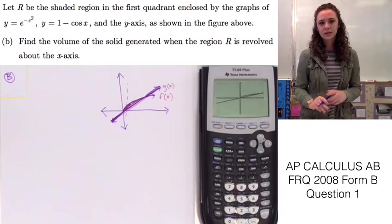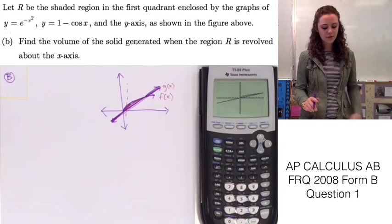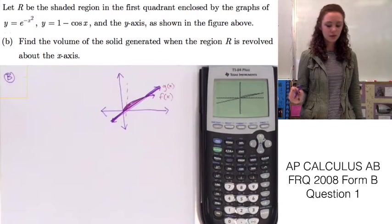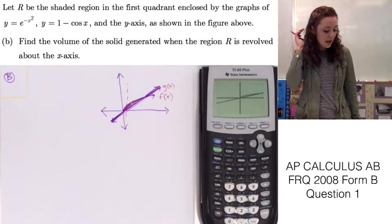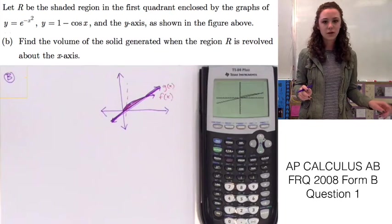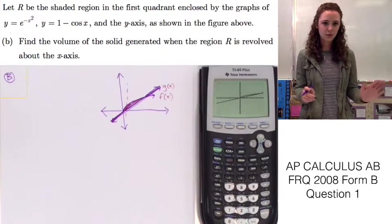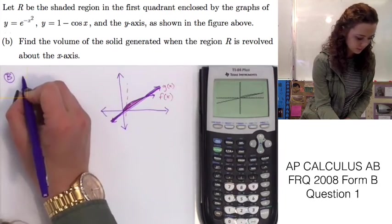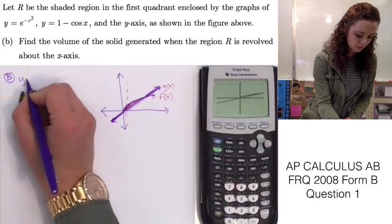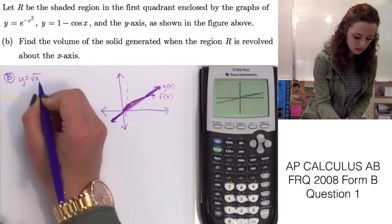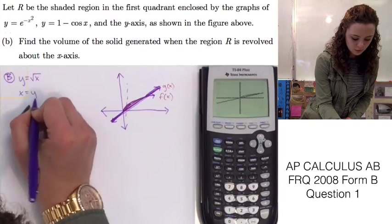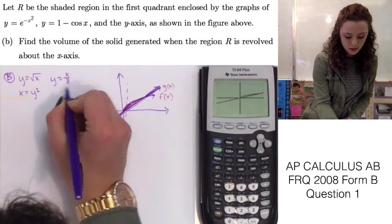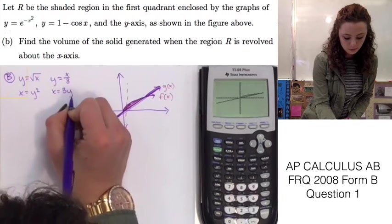We know that this is going to give us a hole in the middle, so we're going to have to use the disk method. We also know that it's rotating along the y-axis, so we need to change our equation so it's in form x equals whatever. So y equals square root x would end up being x equals y squared, and y equals x over 3 will end up being x equals 3y.